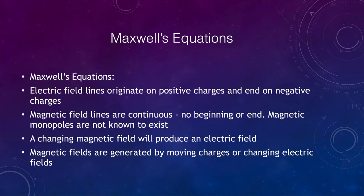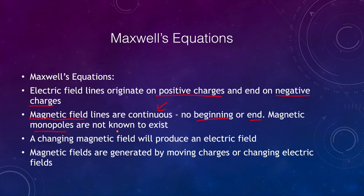Maxwell's equations tell us several things. First, electric fields originate on positive charges and end on negative charges, which tells us about the direction of electric fields. Second, magnetic fields are continuous — they have no beginning or end. Magnetic monopoles do not exist; to the best of our knowledge we have never been able to detect any kind of magnetic monopole, meaning just a north or just a south pole.